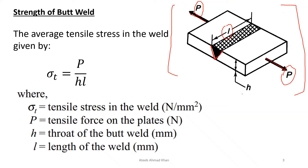The length of the weld is given as L and the thickness of the plate is H. The average stress in the weld is given by σT, which is equal to the tensile load P divided by the area of the weld, which is L times H. An important point to note is that welds have a bulge, and the height of the weld will always be greater than the thickness of the plate.